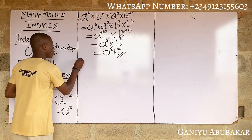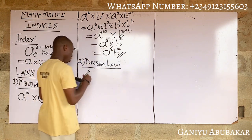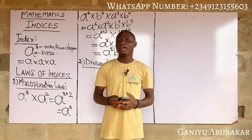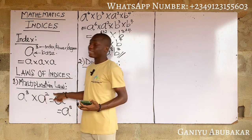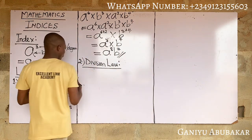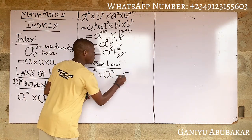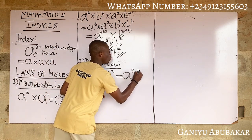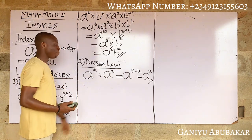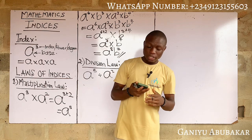The second law is the Division Law. When like bases are dividing, simply subtract their powers. Just as when like bases are multiplying you add their powers, when like bases are dividing you subtract their powers. For example, a⁵ ÷ a² — subtract the powers: 5 − 2 = a³. That's the concept behind the Division Law of indices.